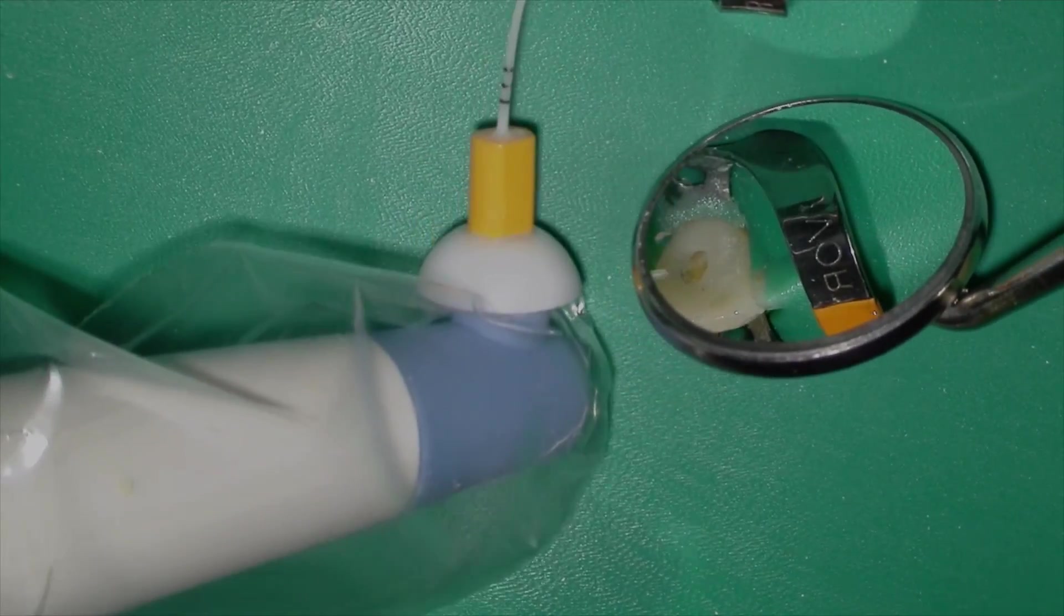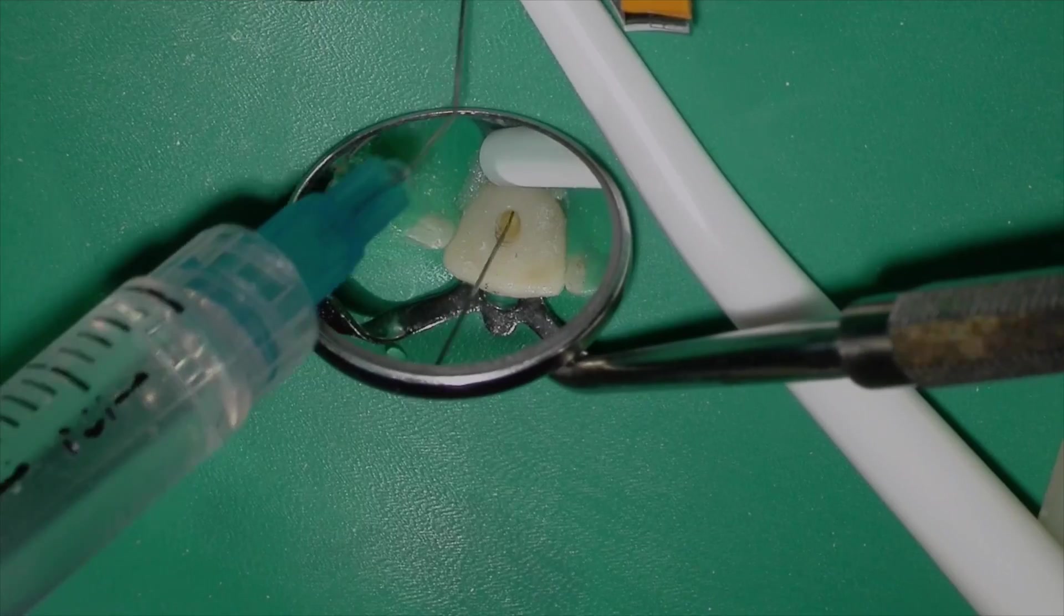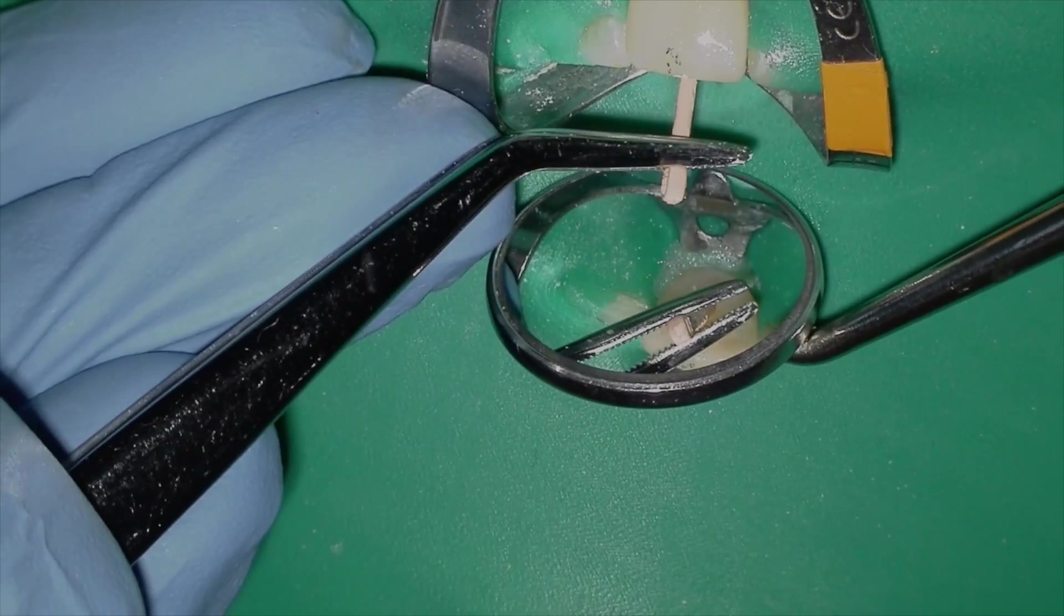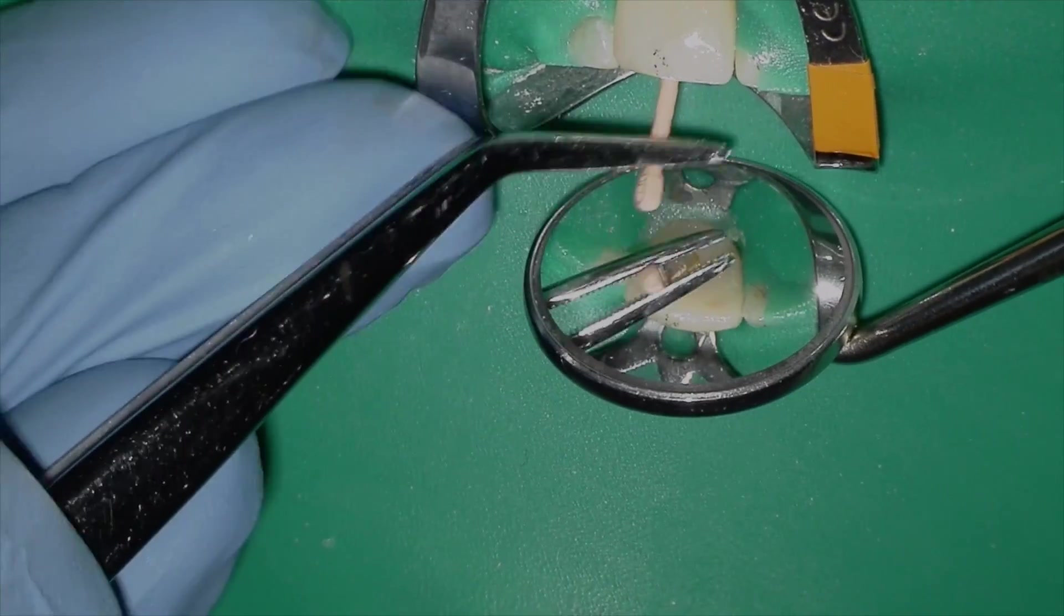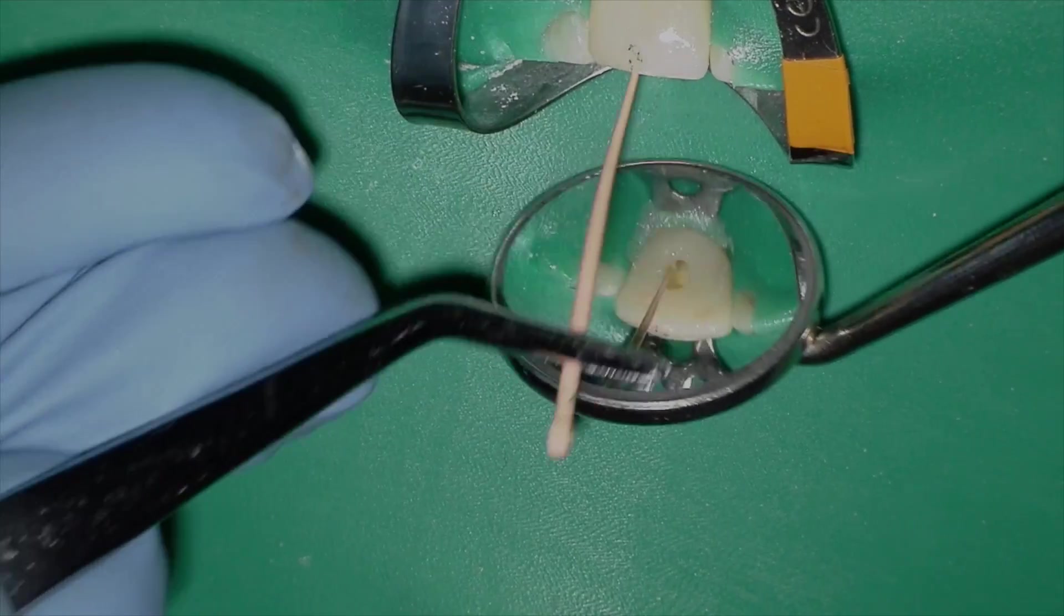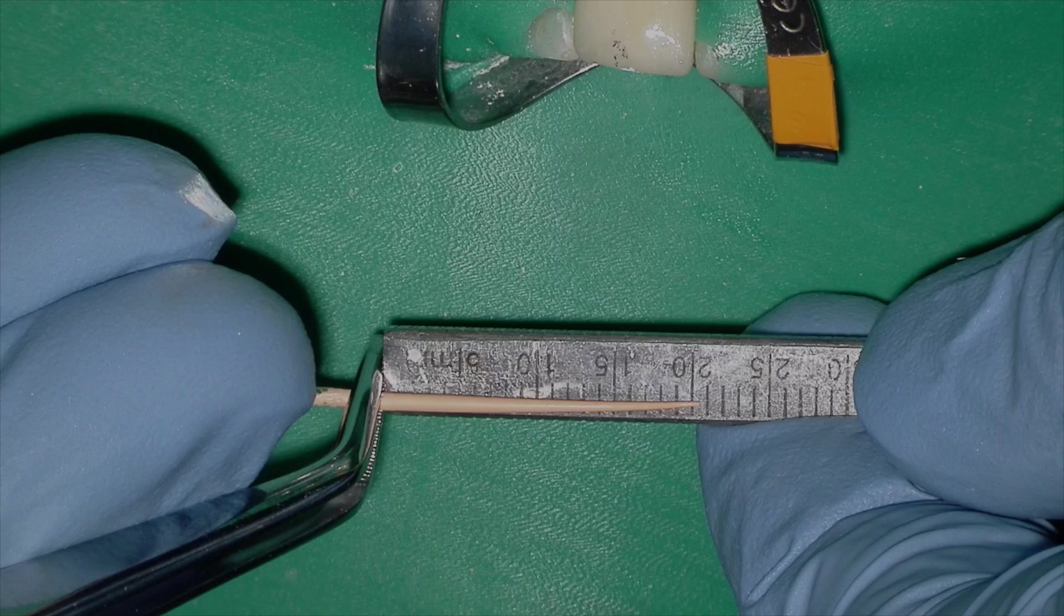Now we're going to activate our irrigants. So I'm going to go through a cycle of hypochlorite, then with EDTA, and then with hypochlorite. And then we're going to fit our gutta percha point. I'm going to do a little bit of manual irrigation activation with the gutta percha point. Then I'm going to go to my reference point, which is the incisal edge. And let's take a measurement and we're right on the money at 20.5.